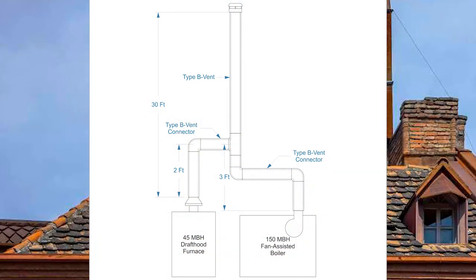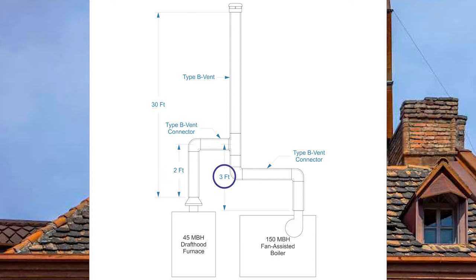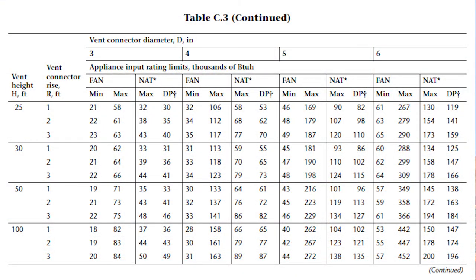For the last example I have a 30-foot common vent height with a 45,000 BTU draft hood equipped furnace and a 150,000 BTU fan assisted boiler. The furnace has a two-foot vent connector rise and the boiler has a three-foot vent connector rise. Both have double wall vent connectors, therefore we need to use table C3. Since the vent height is 30 feet, I need to turn to page 193, the second page of table C3.